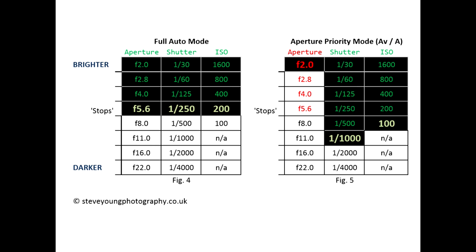Between those two adjustments — shutter speed and ISO — the camera has compensated for the extra light I've allowed in by dialing my F number down and blurring my background. The key point is that the shutter speed and ISO in figure 4, a 1/250th of a second and ISO 200, are perfectly fine. And the shutter speed and ISO in figure 5, being 1/1000th of a second and ISO 100, are also perfectly fine — in fact even more desirable. Either would give a perfectly good result in this outdoor good lighting scenario.